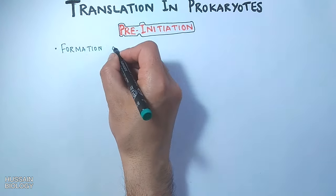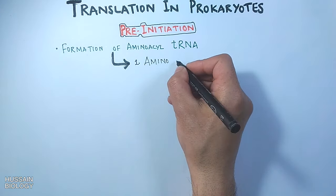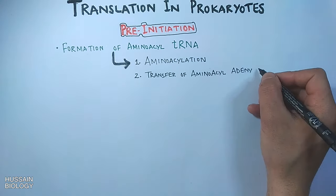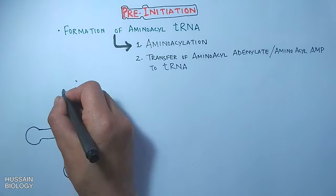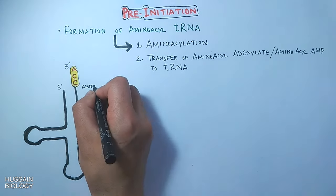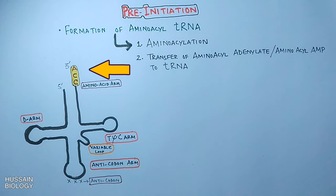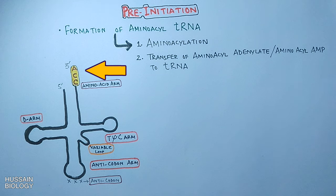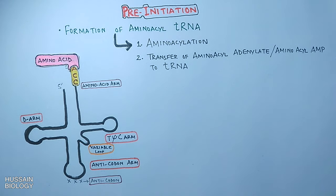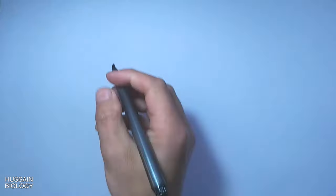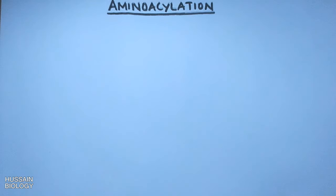In the pre-initiation step we see the formation of aminoacyl tRNA, which is formed through aminoacylation reactions. The aminoacylation reaction is followed by the transfer of aminoacyl-AMP to tRNA. In this diagram we have the tRNA structure, which has different arms; one of them is the acceptor arm, also known as the amino acid acceptor arm. On the three prime end it has the CCA sequence, so the last nucleotide is adenine. It is here where the amino acid — actually the aminoacyl group — binds, giving us the aminoacyl tRNA.